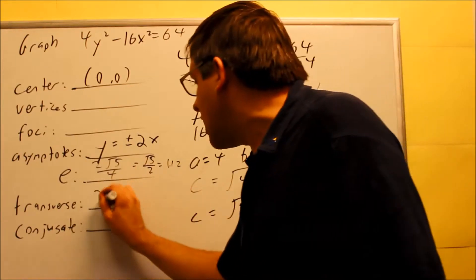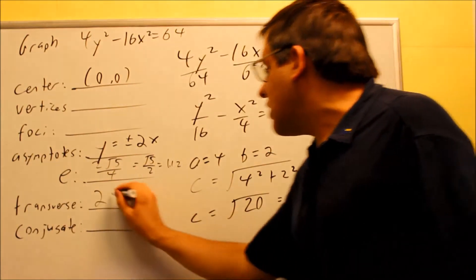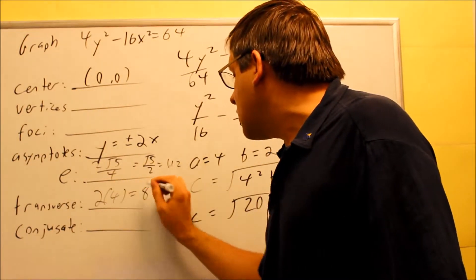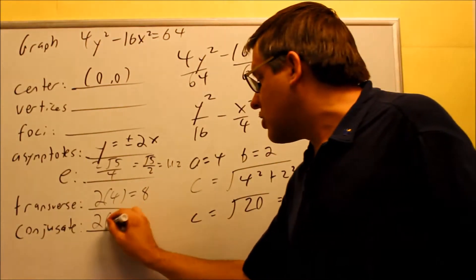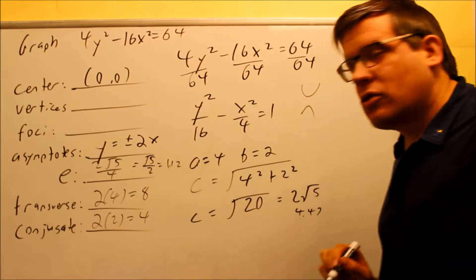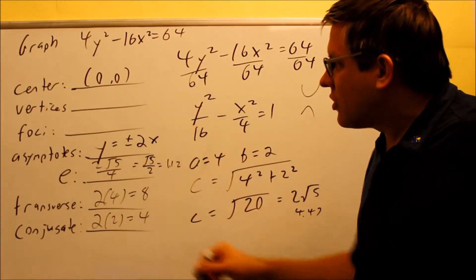So transverse, the formula is the same though. It's always 2 times a, so 2 times 4, that's going to be 8. And conjugate's always 2 times b, in this case it's 2 times 2, which is going to be 4. So we have those, so we have all this information here.